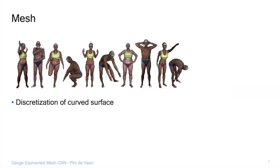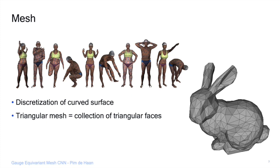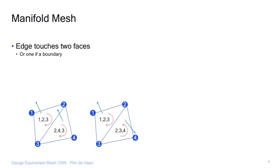A mesh is a discretization of a curved surface. We look at triangular meshes where all faces are triangles, but more generally you can think of arbitrary polygons. In this paper we treat meshes as discretizations of a manifold — not just any collection of faces and edges — so we need constraints such that the mesh actually reflects a manifold.